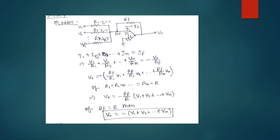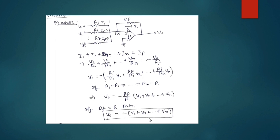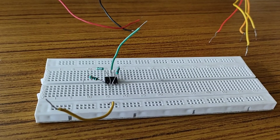All the input currents are added together to give current IF, since there is no current through the op-amp due to its very high input resistance. Writing the currents in terms of voltages and resistances, and rearranging: if all resistances R1, R2, ... Rn are equal, and RF is also equal to R, then we get V0 equals negative of (V1 + V2 + ... + Vn). So this circuit acts as an adder with a negative sign.